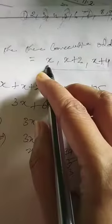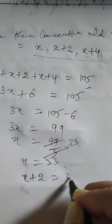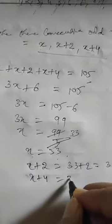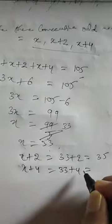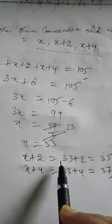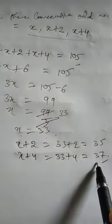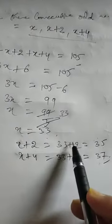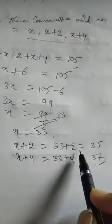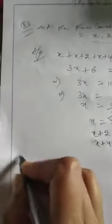So the first odd number is 33. The next odd number is x plus 2, that is 33 plus 2 equals 35. And the third is x plus 4, so 33 plus 4 equals 37. These are the 3 consecutive odd numbers: 33, 35, and 37. Note that 34 is not an odd number so we skip it.